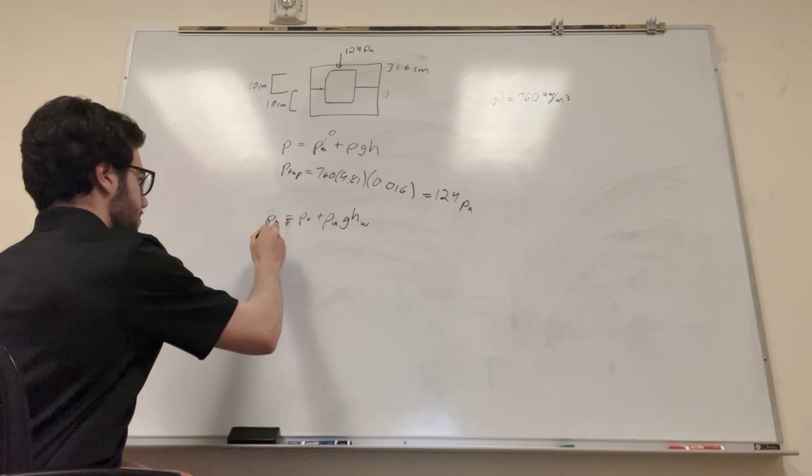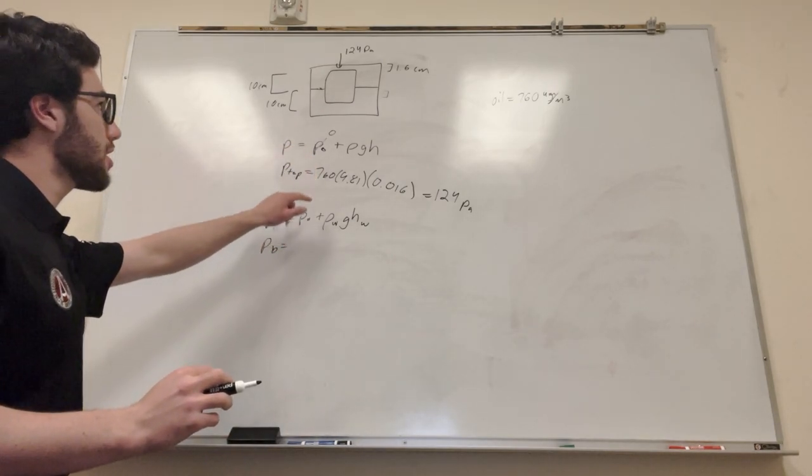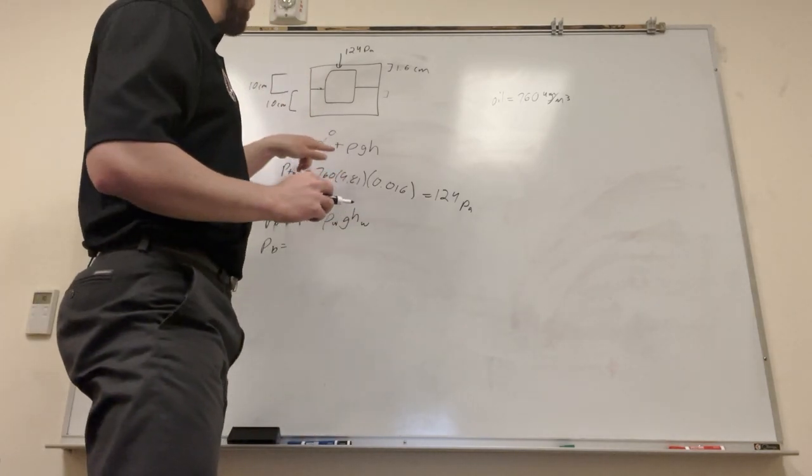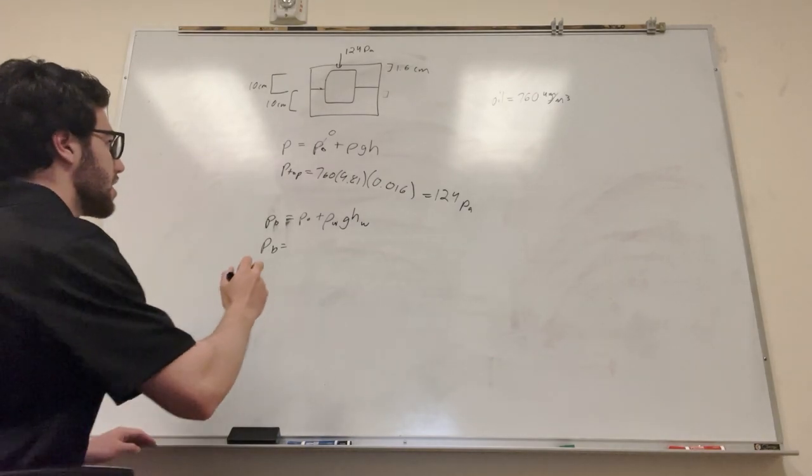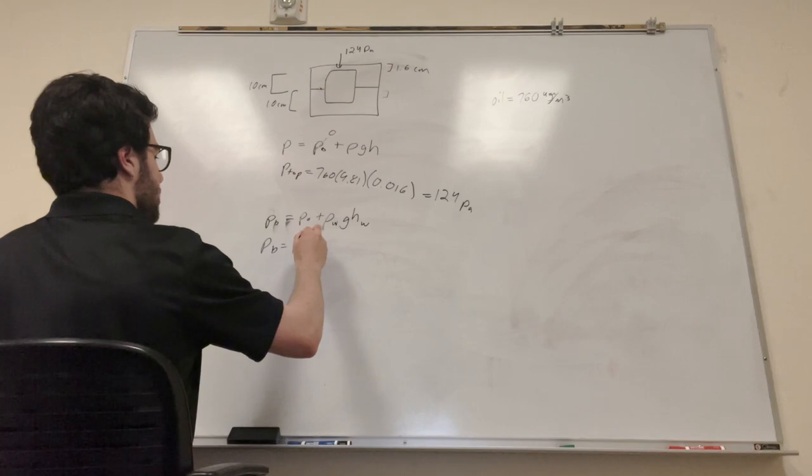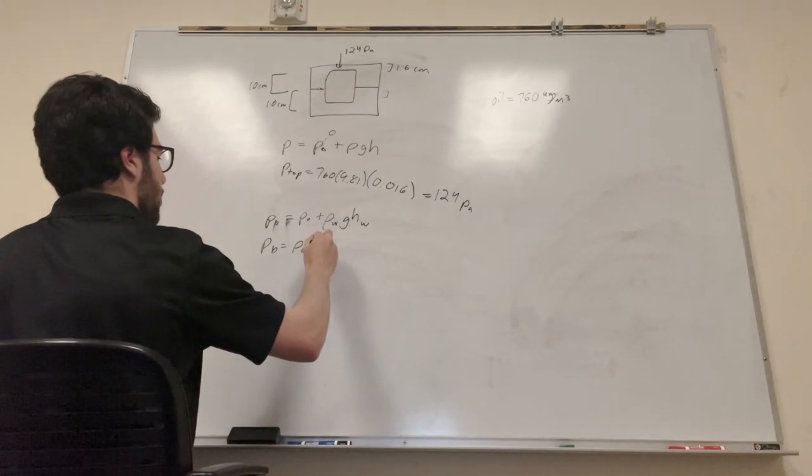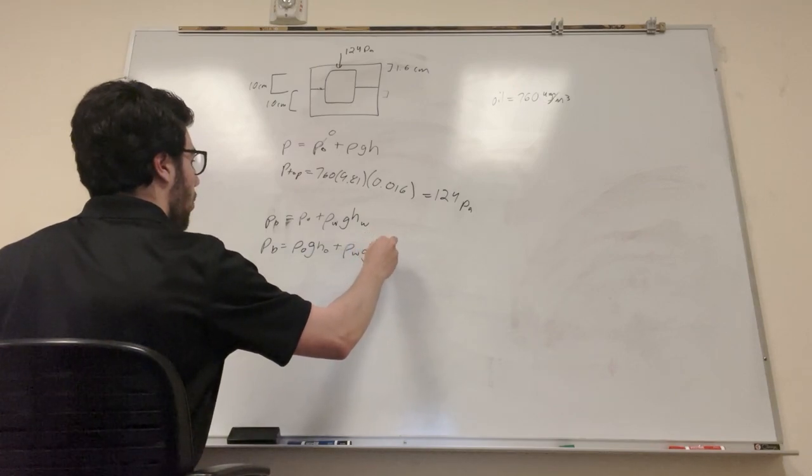So we're gonna get, is equal to, so we know the pressure at this point here is gonna be equal to this pressure, but with the height is equal to 10 centimeters. So this is gonna be the density of oil, times gravity, times the height of the oil, plus the density of water, times the gravity, times the height of the water at that point.